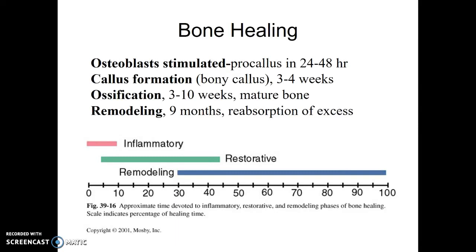After the procallus, a bony callus forms, which goes on for about three to four weeks. After that, ossification starts — you're turning this hard material into regular bone, and that goes on around three to ten weeks, making mature bone. But you've got all this extra callus formation that you started with, basically a cap around the two ends to hold them together.